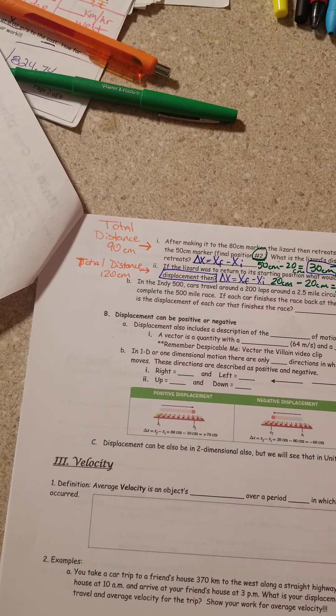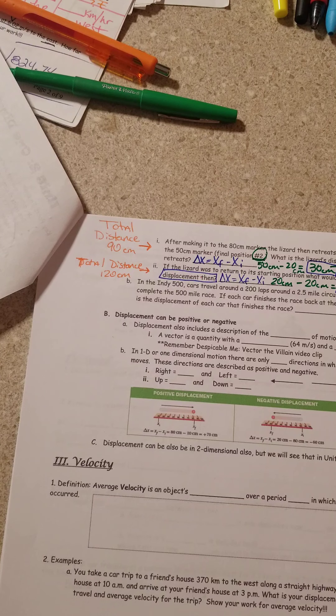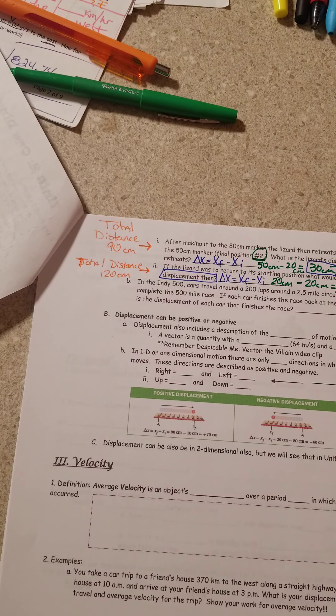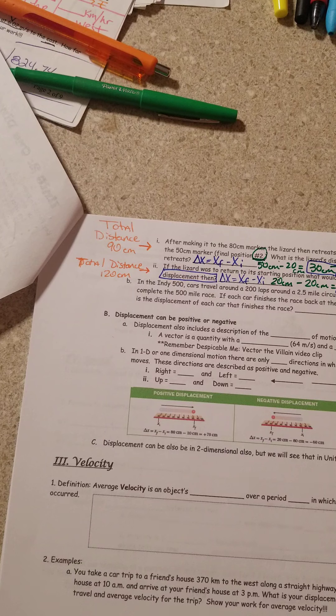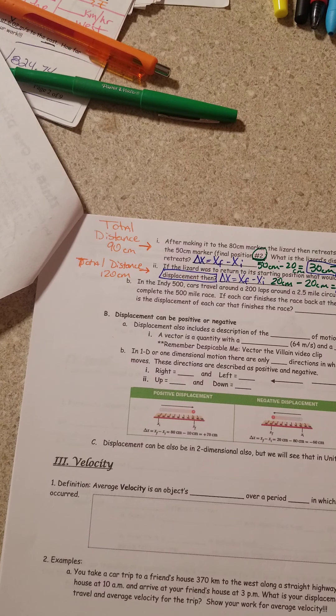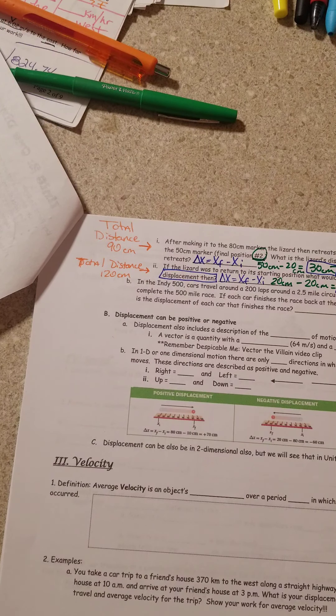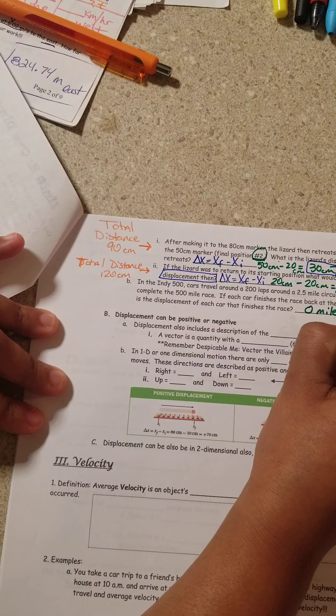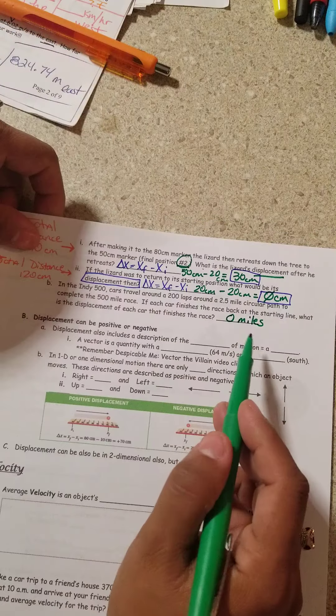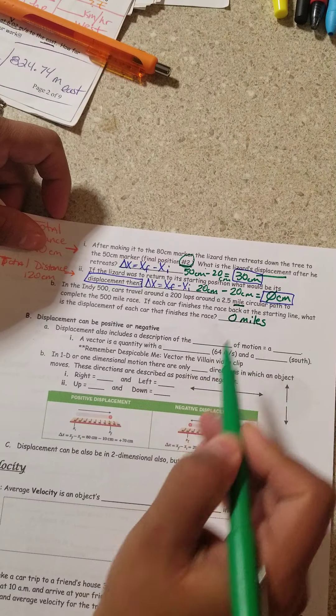In the Indy 500, a car travels 200 laps around a 2.5 circular path to complete a 500 mile race. If each car finishes the race back at the starting line, what is the displacement of each car that finishes the race? The displacement would be zero miles. I'm going to use miles because that's the distance they gave us in.